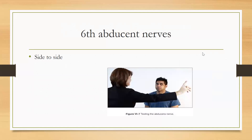Number six is the abducent nerve. We can use the H-test — basically, we observe the side-to-side or lateral movement. We take our fingers to the side and ask the patient to follow them. If the eyeball moves to the side, it means that the abducent nerve is intact. We are testing the lateral recti, which is supplied by the abducent nerve.